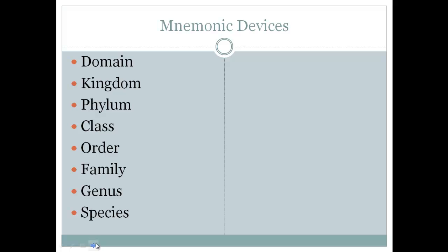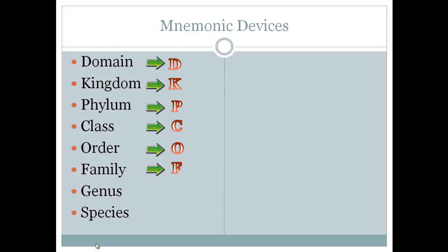So, remember a while ago we went over mnemonic devices. Just as a review, mnemonic devices are a phrase that one can create to help remember a set of information. The example we came up with in class had to do with the classification of organisms: domain, kingdom, phylum, class, order, family, genus, and species. You take the first letter of each word — D, K, P, C, O, F, G, S — and then create a silly phrase from them that's sometimes a lot easier to remember.